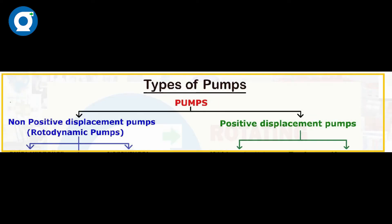Pumps are basically categorized into two types: one is positive displacement pumps, and another is non-positive displacement pumps. Non-positive displacement pumps are also called rotary dynamic pumps or centrifugal pumps. Both positive and non-positive pump types have been explained in a previous video — those who want to see that video, please click the link given in the description.